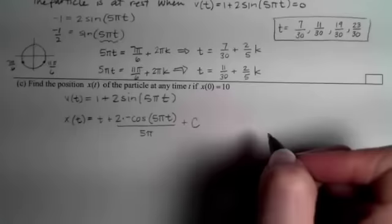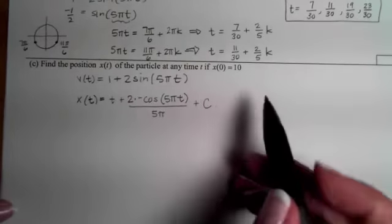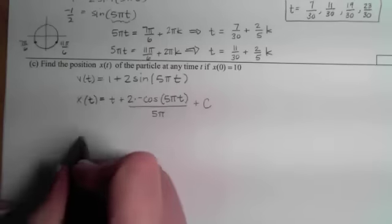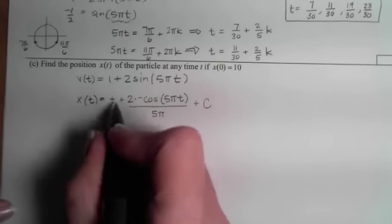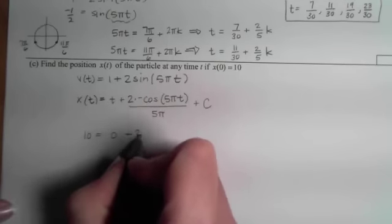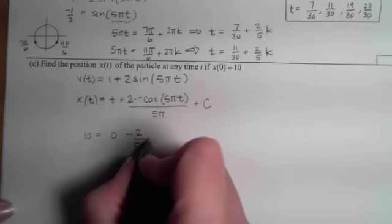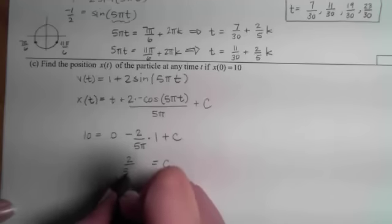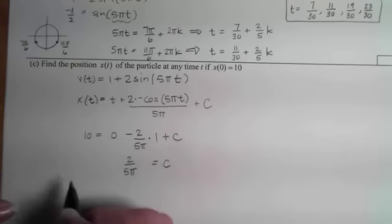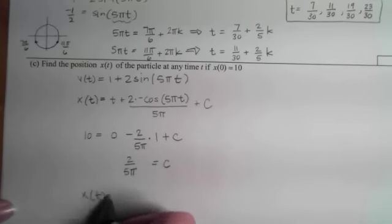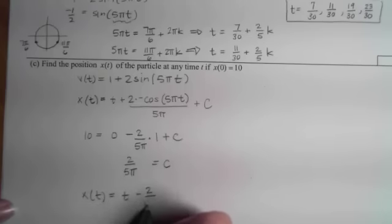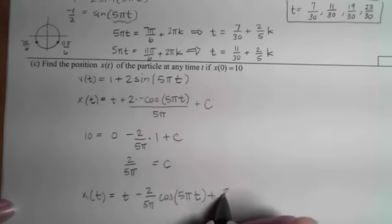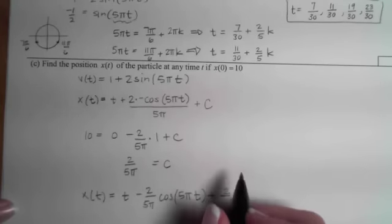Now that we have that C, we can use the point to nail it down. We know that if we plug 0 in, we're going to get 10 out. So I can replace x with 10 and t with 0. Cosine of 0 is 1, so my C will be 2 over 5π. My position at any time will be t - 2/(5π) cos(5πt) + 2/(5π).